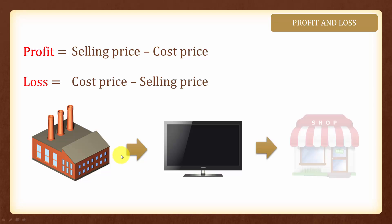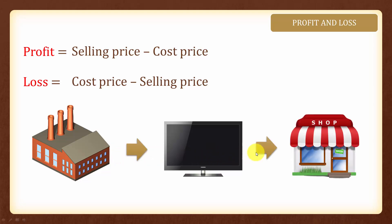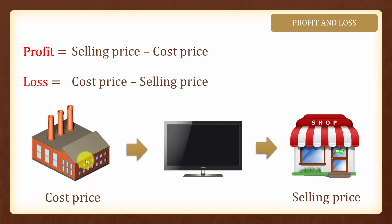Here we have a factory that manufactures televisions which are later sold in a shop. The cost price is the price that is incurred in producing the television. And the selling price, also known as the marked price, is the price that customers pay for buying the television at the shop.